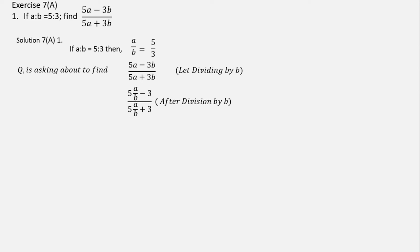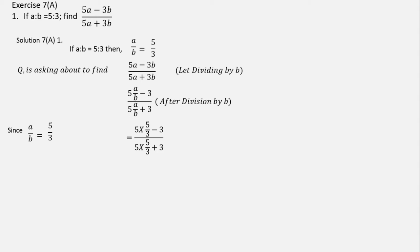Similarly, in the denominator, we have 5a/b plus 3, and that is what we have after division by b. Now, in the question it is given that a/b = 5/3. Therefore, if we put the value of a/b = 5/3, we'll be getting 5 × (5/3) minus 3, over 5 × (5/3) plus 3.